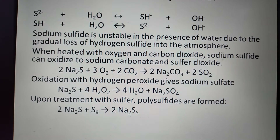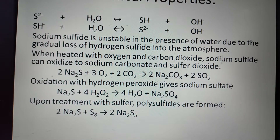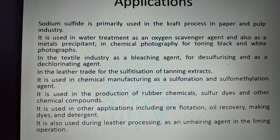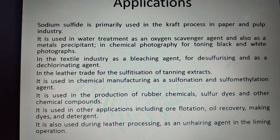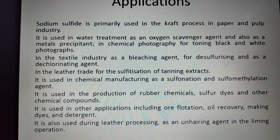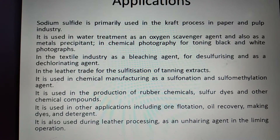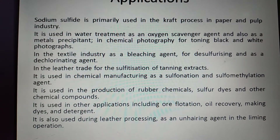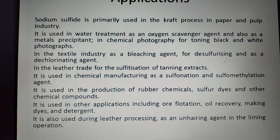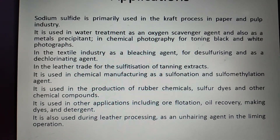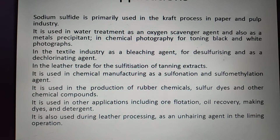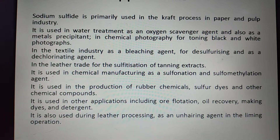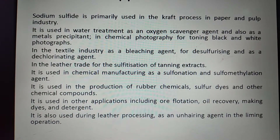Na₂S + S₈ gives disodium pentasulfide (Na₂S₅). Application: sodium sulfide is primarily used in the kraft process in the paper and pulp industry. It is used in water treatment as an oxygen scavenger agent and also as a metal precipitant. In chemical photography, it is used for toning black-and-white photographs.